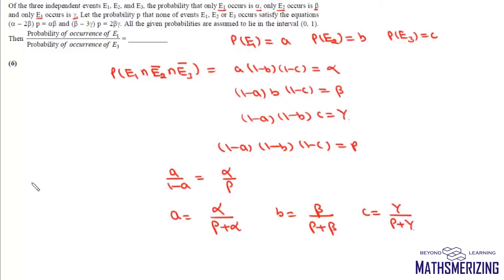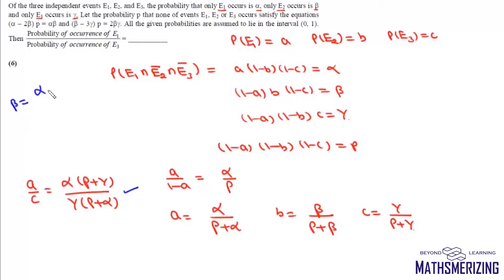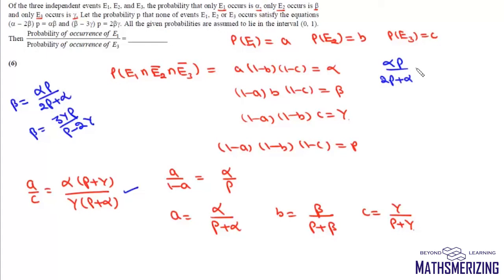We need to find a upon c, which equals alpha times (p plus gamma) upon gamma times (p plus alpha). We will obtain this expression from the two given conditions by eliminating beta. From the first equation, beta equals alpha p upon (2p plus alpha), and from the second equation, beta equals 3 gamma p upon (p minus 2 gamma). Equating these two expressions: alpha p upon (2p plus alpha) equals 3 gamma p upon (p minus 2 gamma).